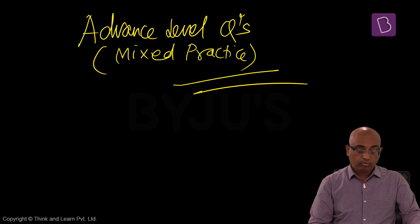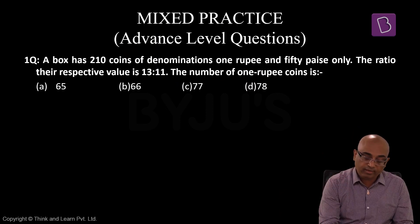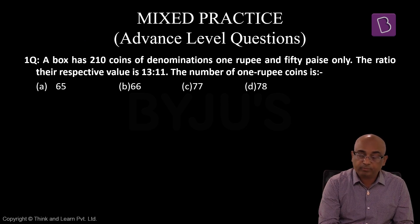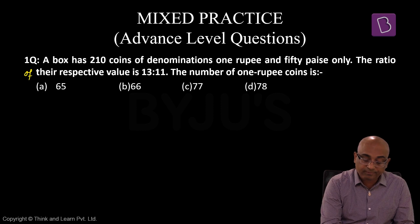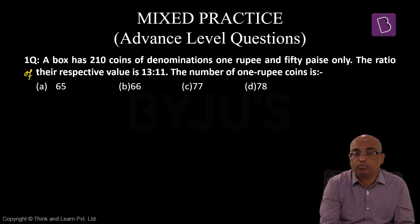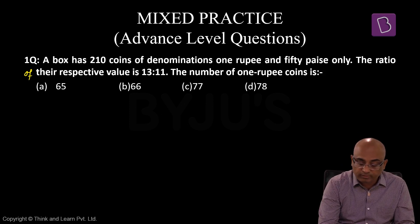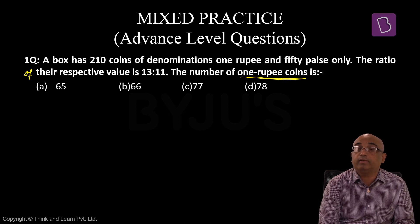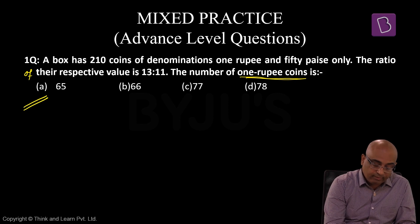First question: A box has 210 coins of denominations 1 rupee and 50 paise only. The ratio of their respective values is 13 is to 11. The number of 1 rupee coins is? Question में दिया है एक box में 210 coins हैं 1 rupee और 50 paise के सिक्कों से मिलकर बना हुआ है, उनके मानों का अनुपात 13 अनुपात 11 है, तो 1 रुपए वाले कुल कितने सिक्के हैं।